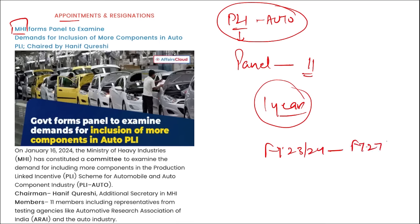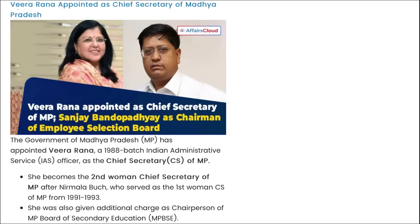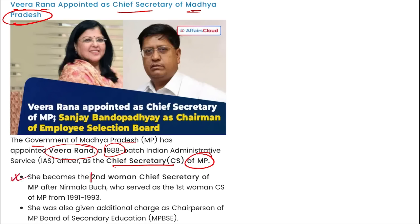Veera Rana has been appointed as the Chief Secretary of Madhya Pradesh. The Government of Madhya Pradesh appointed Veera Rana, a 1988-batch IAS officer, as Chief Secretary of Madhya Pradesh. She became the second woman Chief Secretary of MP, after Nirmala Buch who served as the first from 1991 to 1993. She was also given additional charge as Chairperson of the MP Board of Secondary Education.